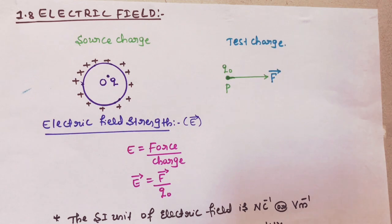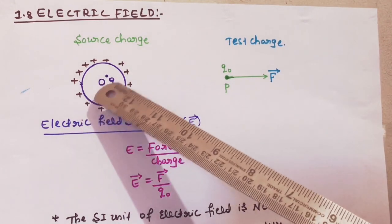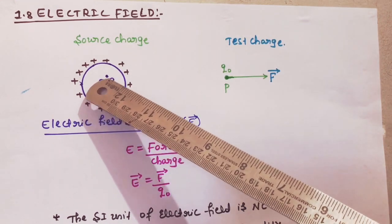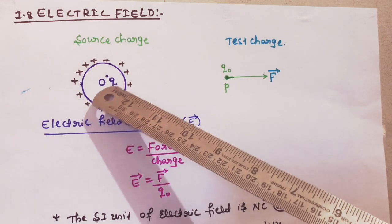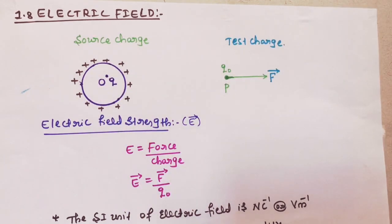All of you are already familiar with the definition of charge. Source charge means it is the charge which produces an electric field. Consider a charge Q at point O — this charge produces a field in the region around it. The region around the source charge which produces an electric field is called the source charge.